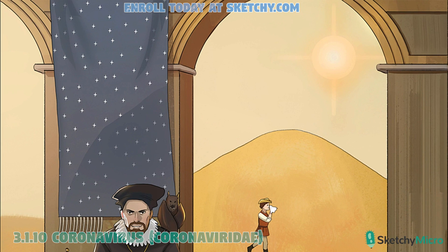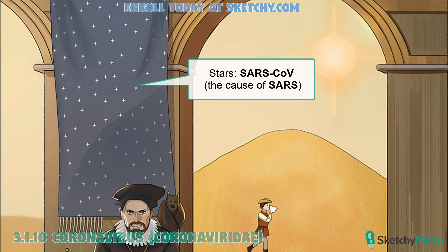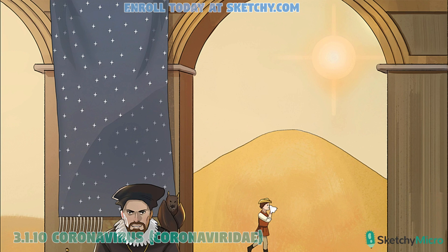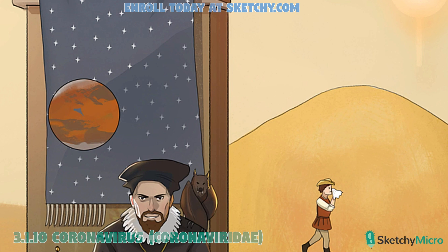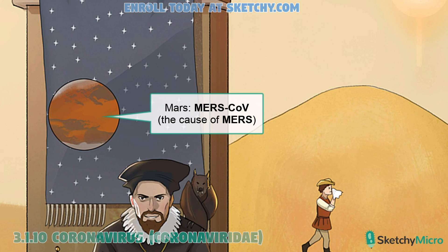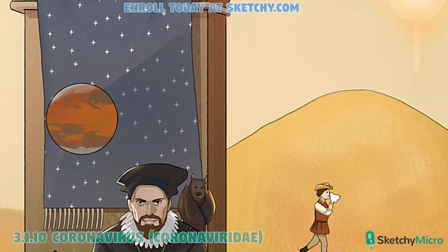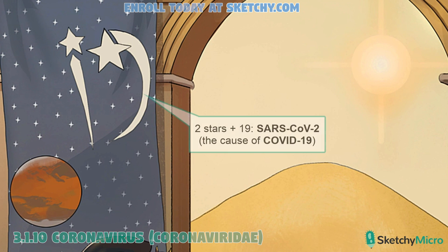We'll depict the three highly pathogenic coronaviruses on a banner, starting with SARS-CoV-2. The whole mess started with SARS-CoV, which stands for Severe Acute Respiratory Syndrome Coronavirus. The OG SARS-CoV emerged in 2002. Next came MERS-CoV, or Middle East Respiratory Syndrome Coronavirus, in 2012. And of course, the newest addition is SARS-CoV-2, the virus that causes coronavirus disease 19, better known as COVID-19. The virus was named SARS-CoV-2 because it's genetically similar to the original SARS virus.